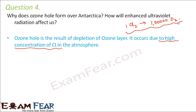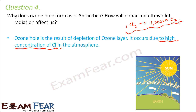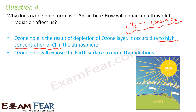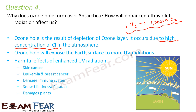How will enhanced ultraviolet radiation affect us? Ultraviolet radiation has a lot of harmful effects. When the ozone hole occurs, it exposes the earth's surface to more and more ultraviolet radiations. These ultraviolet radiations can cause skin cancer, breast cancer, damage to the immune system, slow blindness, and damage to plants. These are some of the extremely harmful effects of ultraviolet radiation.